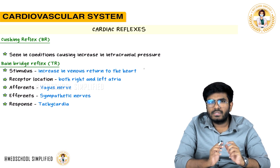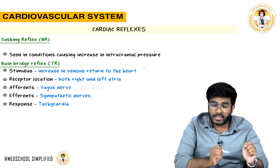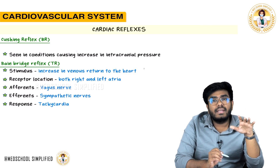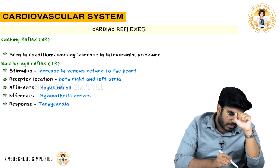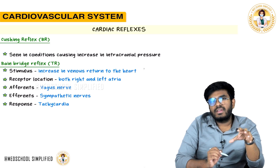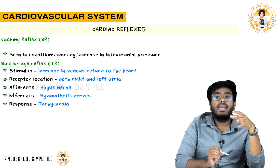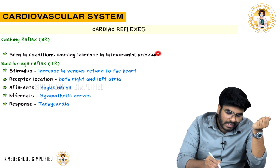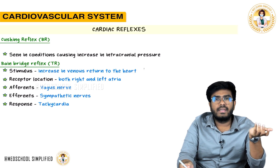The first point to remember is that Cushing's reflex is a bradycardic reflex, which means whenever this reflex happens, heart rate decreases. Cushing's reflex is seen in conditions whenever there is increased intracranial pressure.